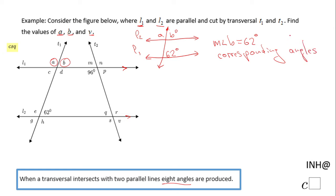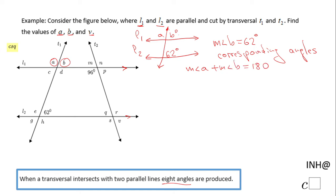Now I can easily find A because I have B = 62°. Angle A and angle B are supplementary — they form line L1 in the original picture. So the measure of angle A plus the measure of angle B equals 180°. They form a linear pair.